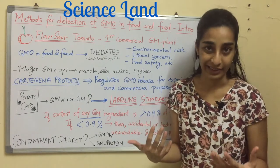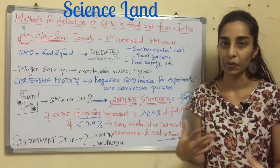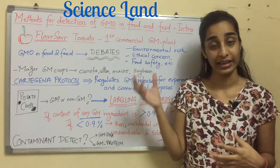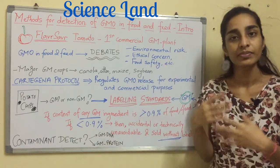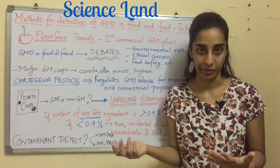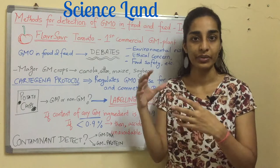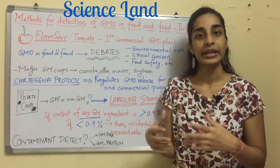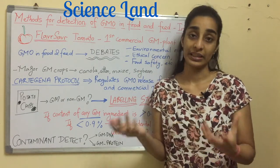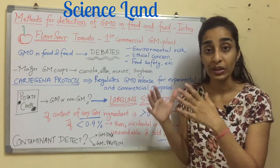We are talking about genetically modified organisms, particularly in food, and how you can detect them. This video is more of an introduction; upcoming videos will cover the actual methods for detecting GMO in food. How do you define GMO? Any organism which is genetically modified is known as a GMO — for example, a genetically modified plant or a genetically modified microorganism.